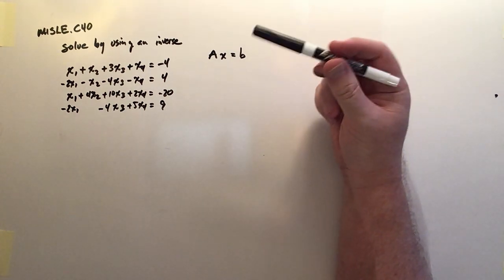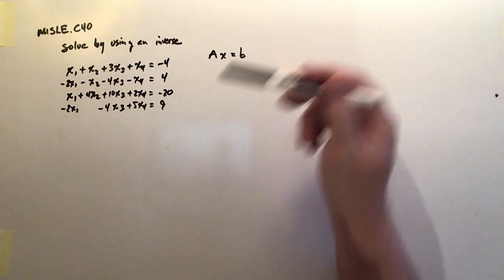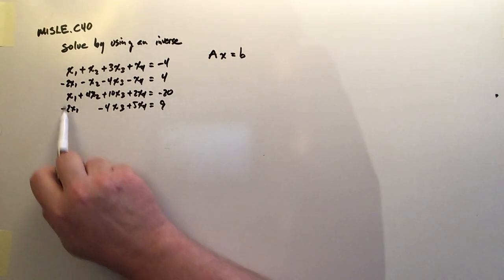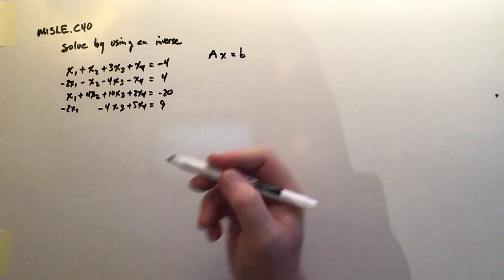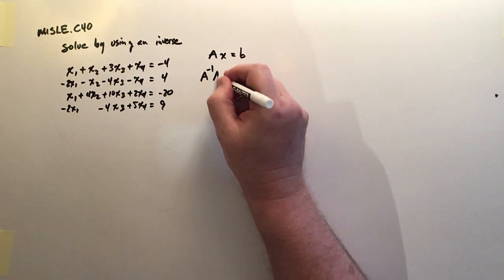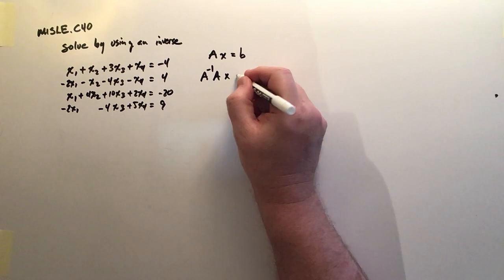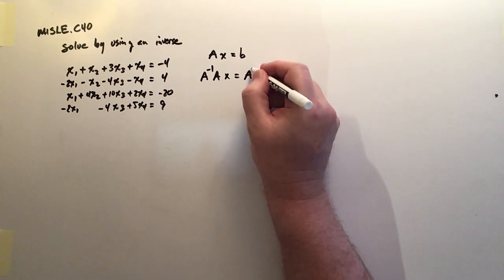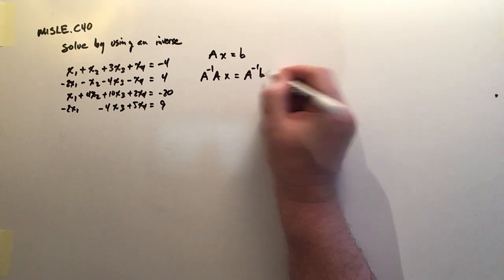Okay, so what do we do instead? Well, let's exploit this idea of an inverse. If I can find the inverse of matrix A, look what I can do. I can take inverse of A times A on the left side. And then on the other side, I can take inverse of A times B on the right side.